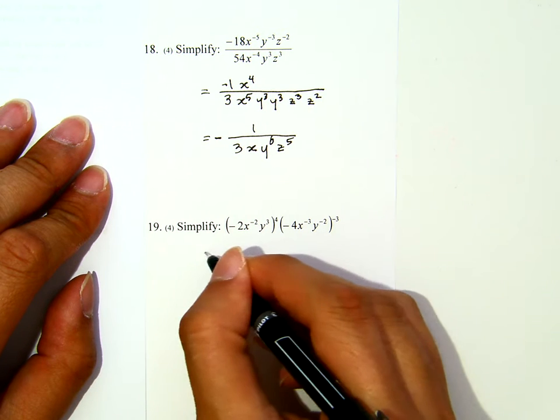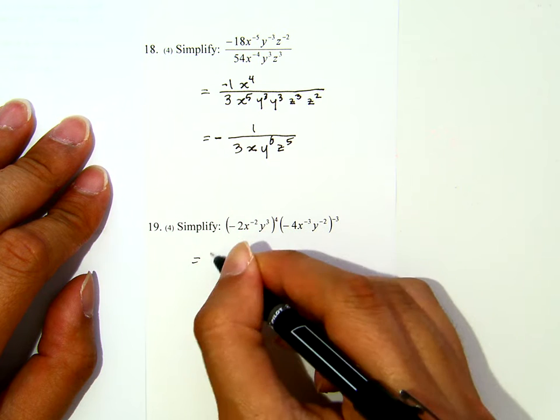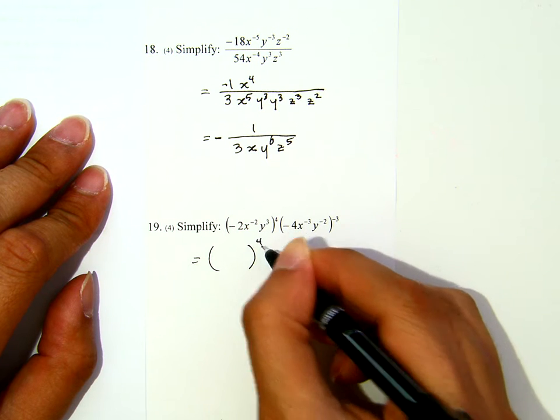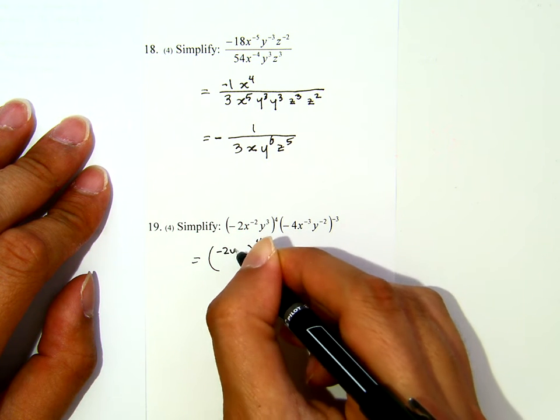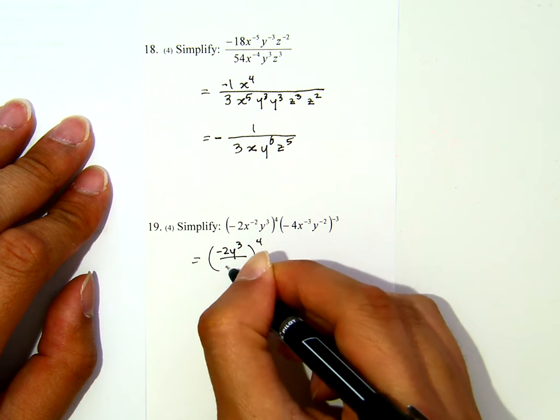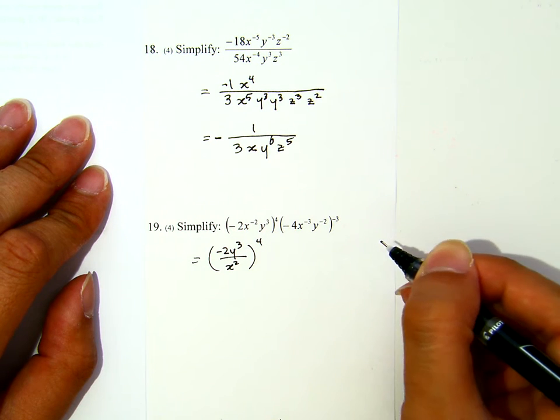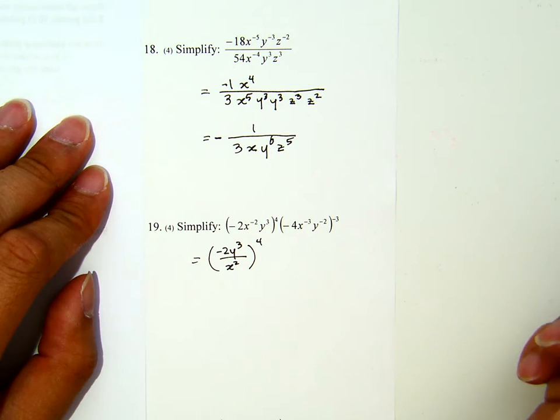Now here, what I will do first, on each grouping symbol, I will rewrite them in the way that I don't have negative exponent anymore. The x to the negative 2, I bring it down on the denominator.